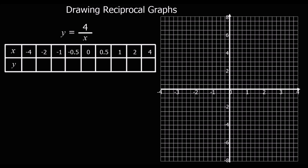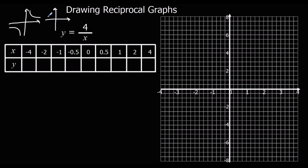In this video we're going to draw reciprocal graphs. Reciprocal graphs happen when it's something over x. For a positive value, the graph looks like this — it's in two sections. For a negative value, we have the same shape but in the other two quadrants.